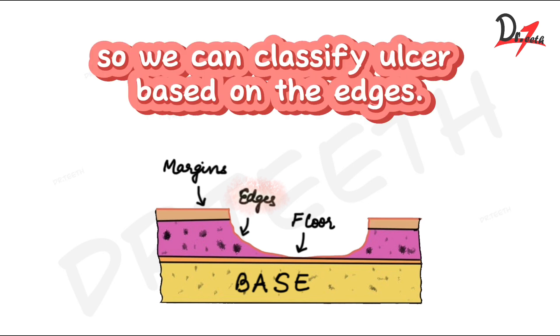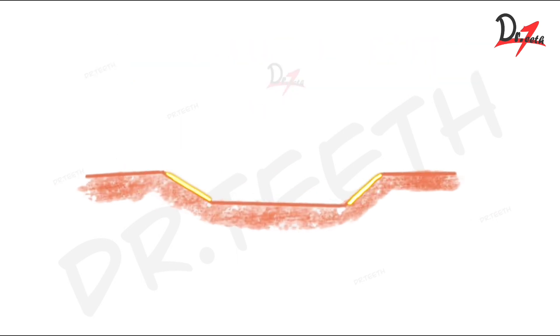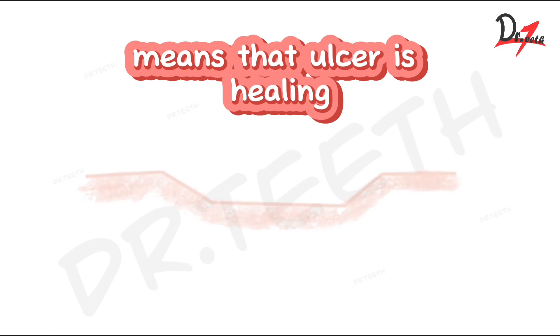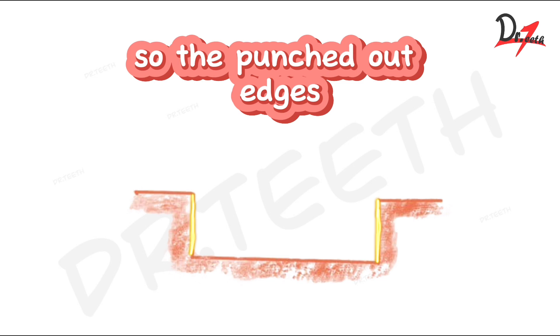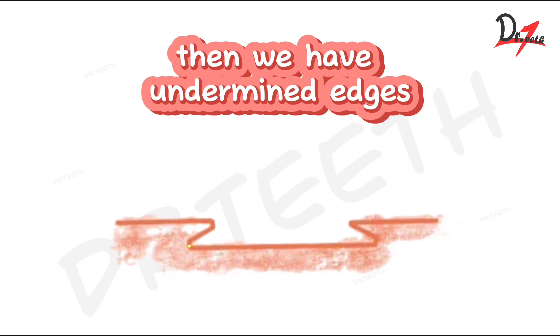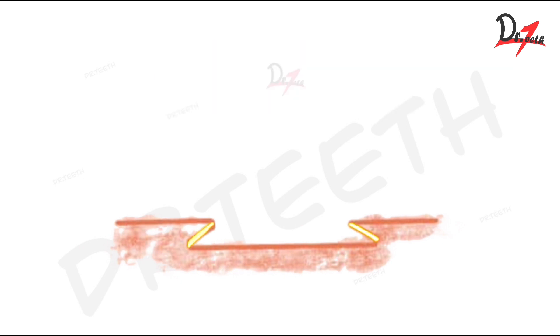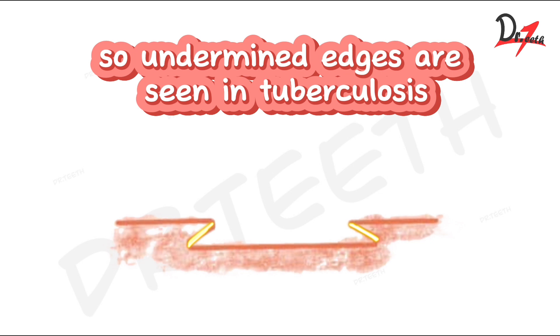If the ulcer has a sloping edge, it is a healing ulcer — meaning that ulcer is healing. Then we have punched out edges, which are seen in arterial ulcers and syphilitic ulcers. Then we have undermined edges, which are seen in tuberculosis.